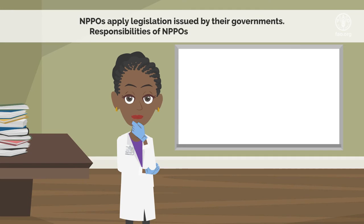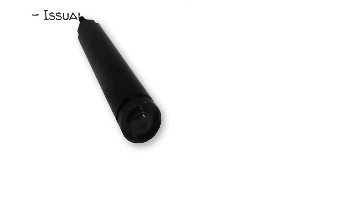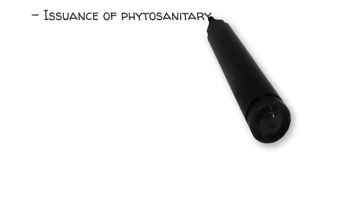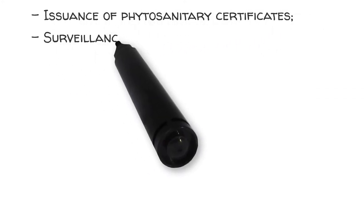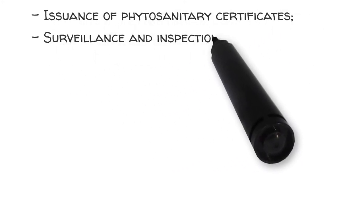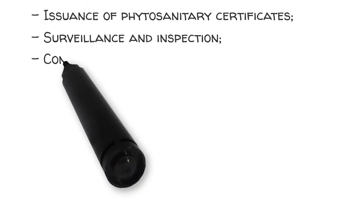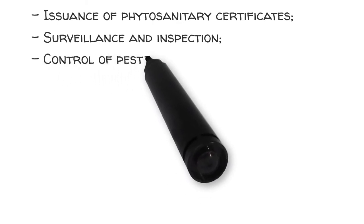Responsibilities of national plant protection organizations include the following: issuance of phytosanitary certificates, surveillance and inspection, and control of pests.